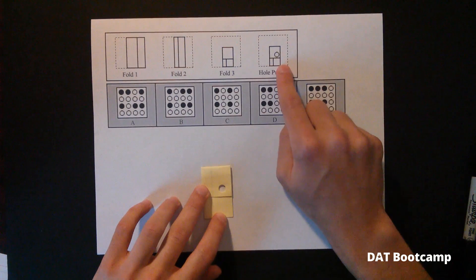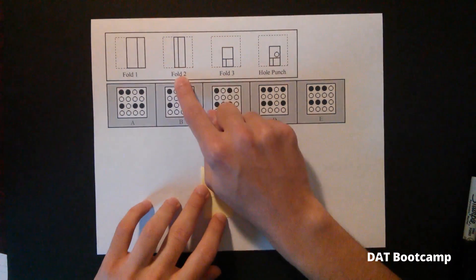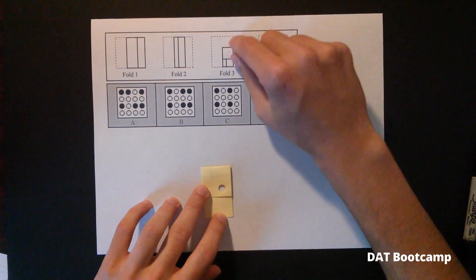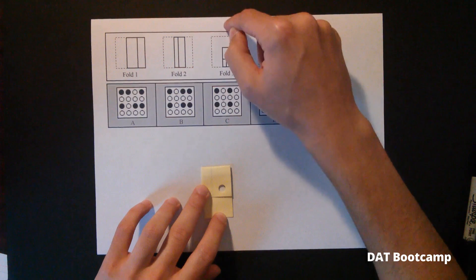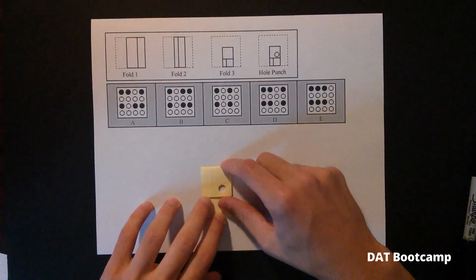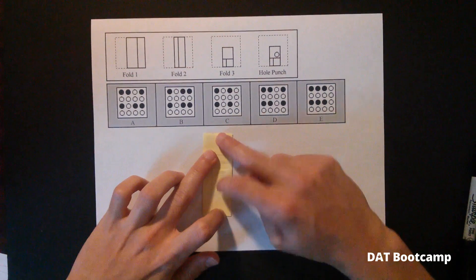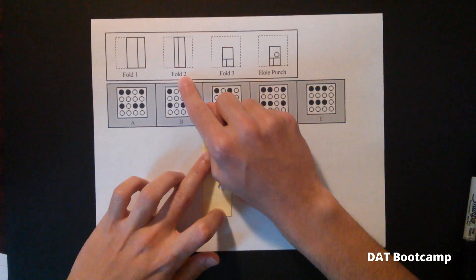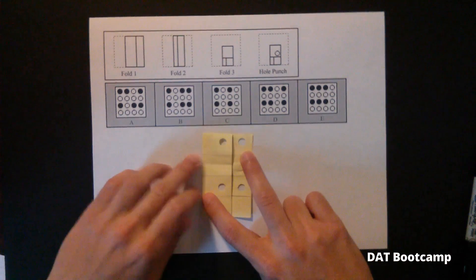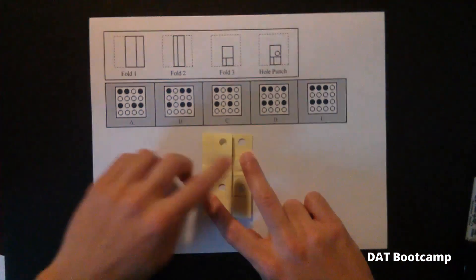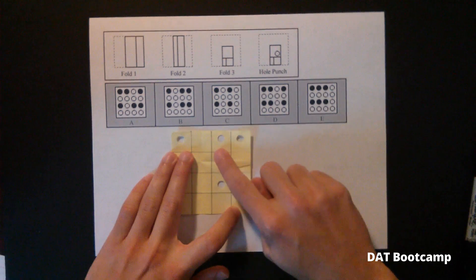So unfolding this one, we remember we go backwards step-by-step. We go from fold three to fold two. We see that the only difference was that this top piece was folded down. The top was folded to the bottom. We're going to unfold it. And we're going to see that there's two holes now here. Now we're going to unfold from two to one. And finally, we're going to unfold from one to zero. And we see that this matches up with answer choice B.